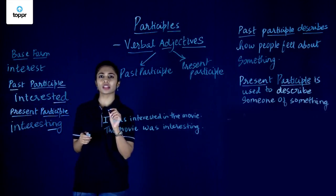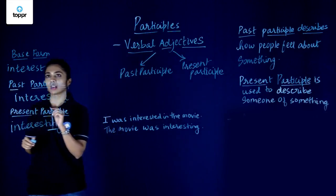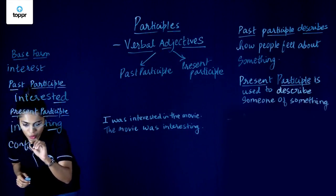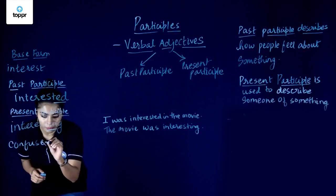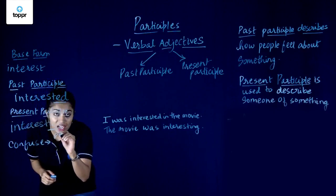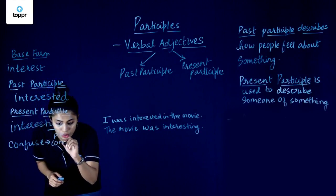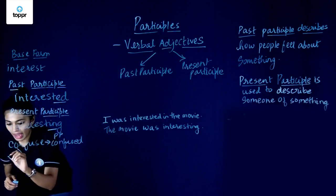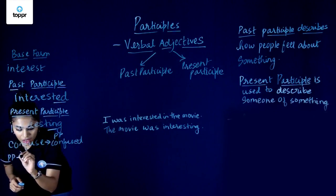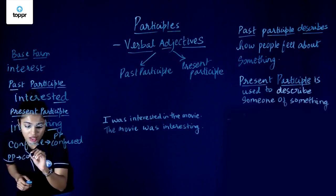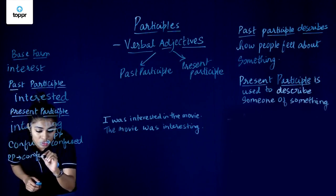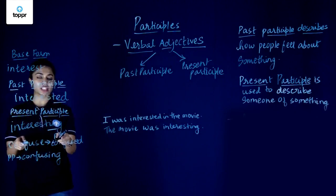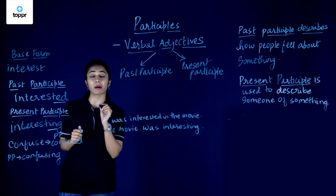Let us take one more base verb: 'confuse'. The past participle, or PP, is 'confused' — we have added an -ed. And then we have the present participle, which is 'confusing', because we simply add -ing to the base form to form the present participle.